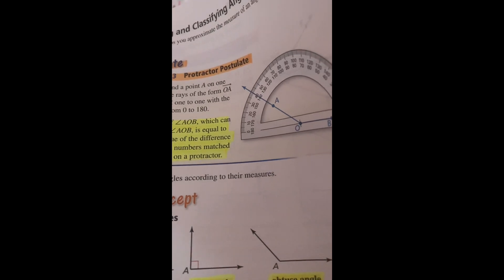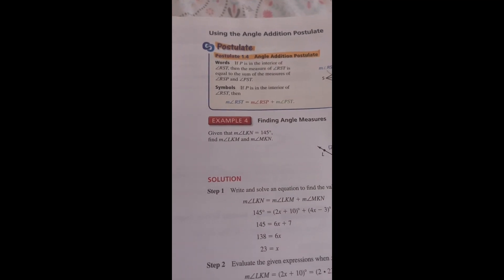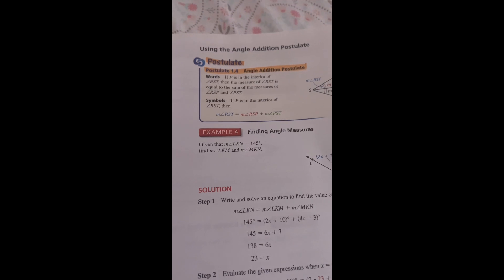Common Error: Most protractors have an inner and outer scale. When measuring, make sure you're using the correct scale. Reading: In diagrams, matching arcs indicate congruent angles. When there is more than one pair of congruent angles, use multiple arcs.